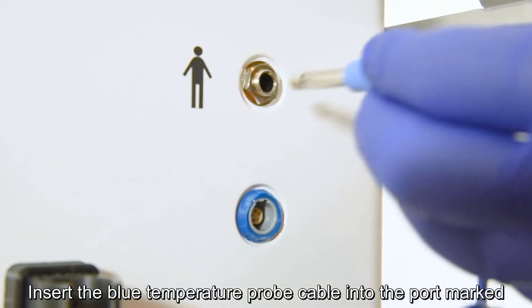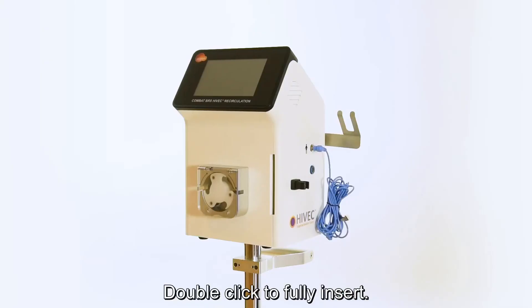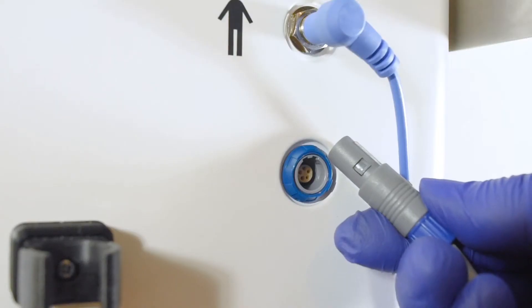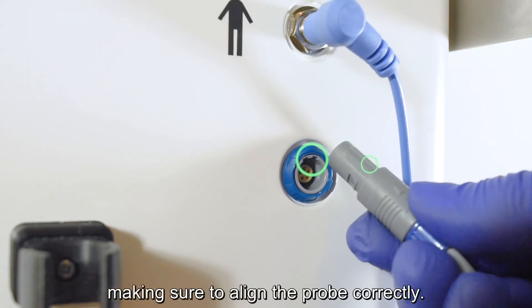Insert the blue temperature probe cable into the port marked with a picture of a person. Double click to fully insert. Fit the grey pressure cable into the lower port, making sure to align the probe correctly.